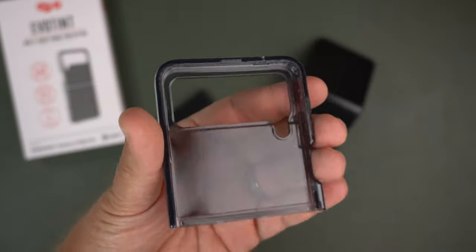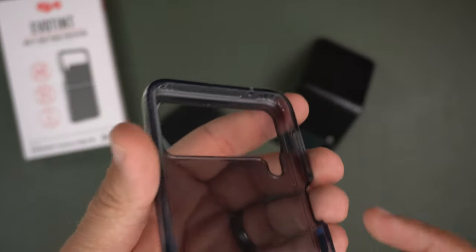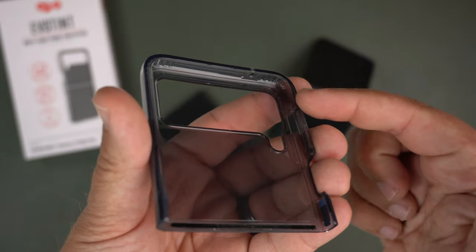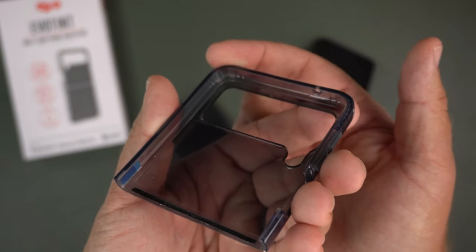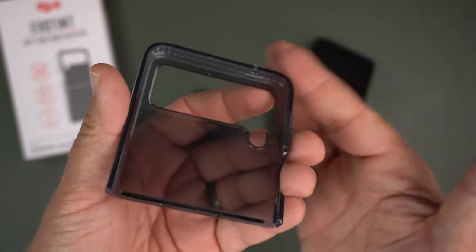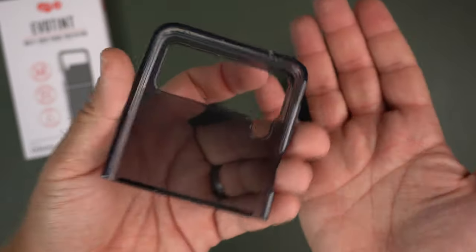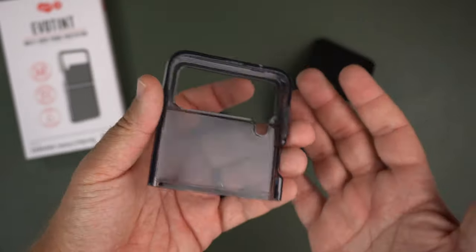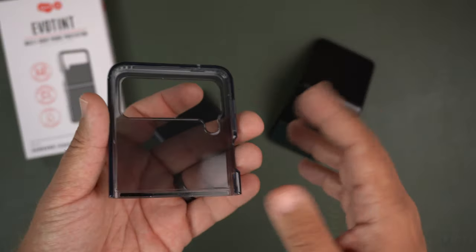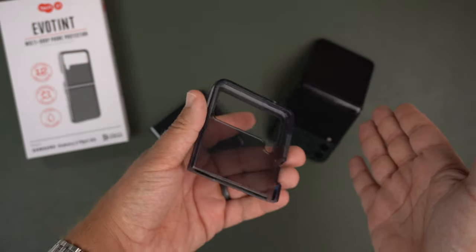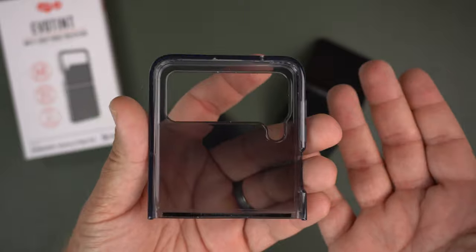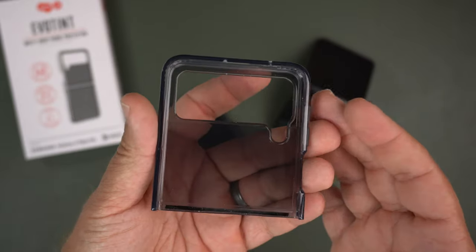Looking at the interior of the top portion, you can see these little ripples in the corners. That's going to help with corner protection. When you drop it and it hits the corner, it's supposed to help dissipate the energy away from the phone so you don't get a break. With 12 feet of protection it should work.